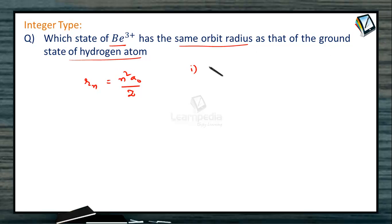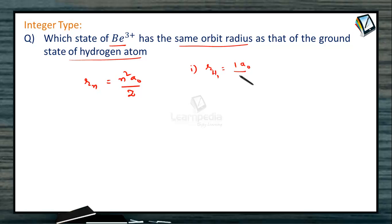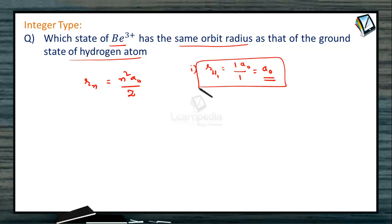Let us first find out the radius of the ground state of hydrogen atom. The formula is Rn = n² a₀ / z. For the first orbit of hydrogen, n = 1 and z = 1, therefore the radius is a₀.